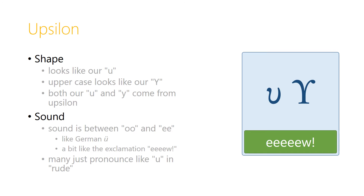Upsilon is very much like our letter U in the lowercase. Just watch the uppercase, because it ends up looking like an uppercase Y. Both our letter U and our letter Y come from the Greek letter upsilon, so this is why there's the overlap. The sound of upsilon is somewhere between our U and E sounds — it's a lot like the German letter U with an umlaut, and makes a sound a bit like the exclamation 'eew.' Many just pronounce it like U as in rude. So you can decide whether to pronounce it that way or try to produce that E sound.